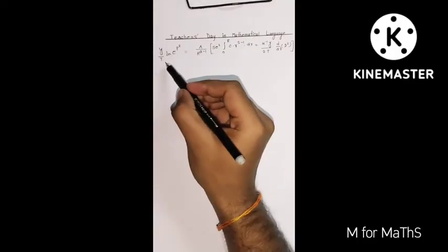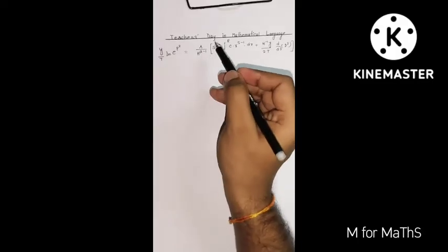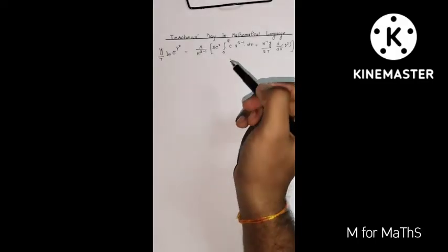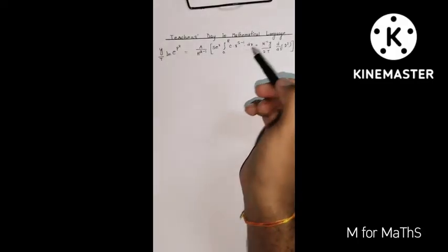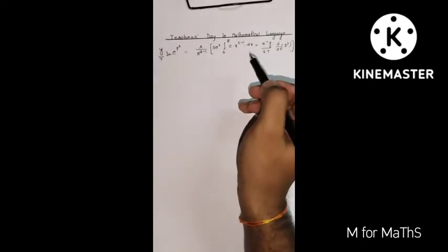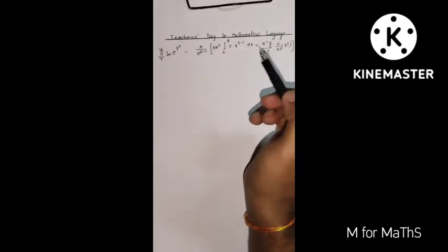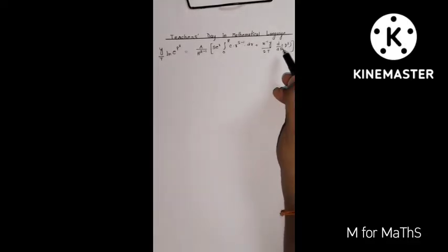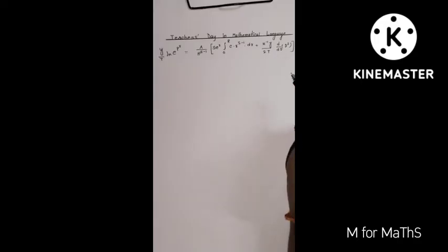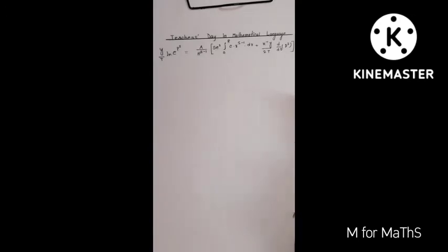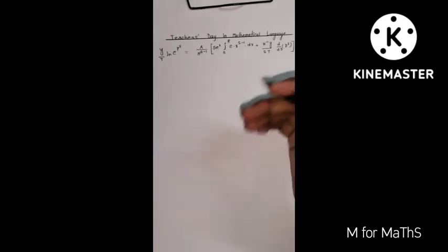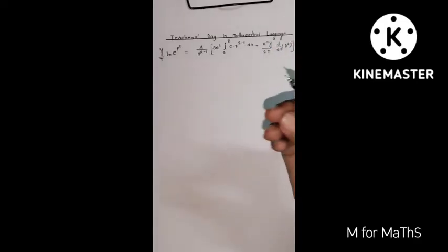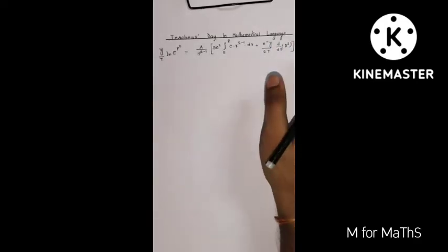The equation is: y divided by capital T, ln of e to the power p-squared, equals a divided by h to the power (a minus 1), within brackets s into e-squared, integral over 0 to capital R of c into r to the power (s minus 1) dr, plus h-inverse times y divided by 2t, into d/d of d-squared. Here I have taken capital D as a variable, though most of the time capital letters are taken as constant terms in mathematics.